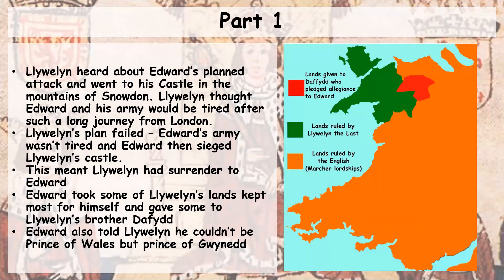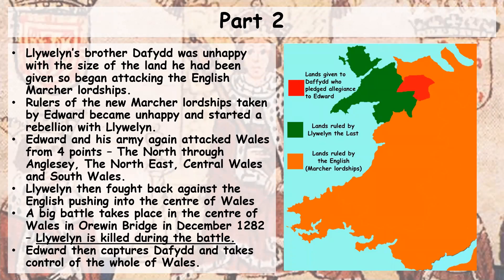This meant that Llewellyn, in order to save himself, had to surrender to Edward. After surrendering, Edward took some of Llewellyn's lands, keeping most for himself by creating more marcher lordships, and gave some to Llewellyn's brother Davyf — remember, Davyf had pledged his allegiance to Edward, not to Llewellyn. Edward also told Llewellyn he could no longer call himself the Prince of Wales, only the Prince of Gwynedd. You can see on this map how much Llewellyn's lands have shrunk, how much Edward's have grown, and the lands given to Davyf.